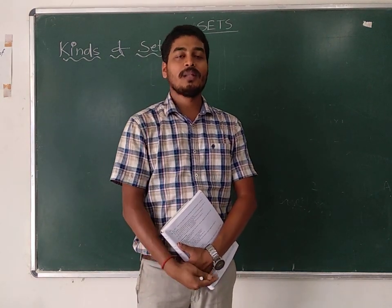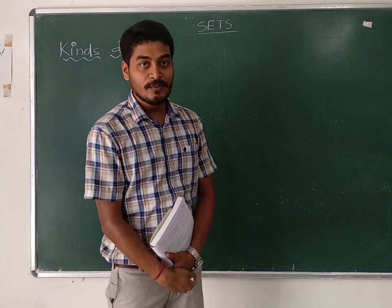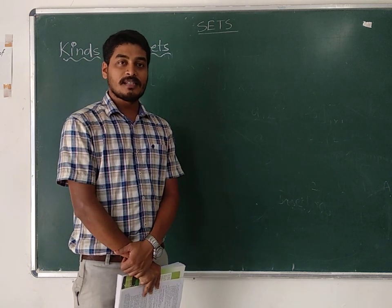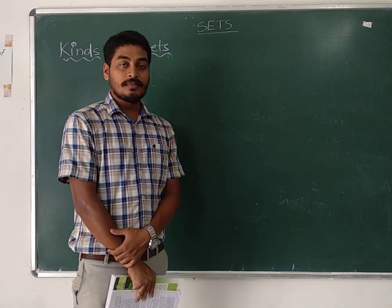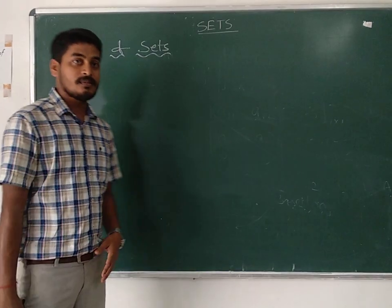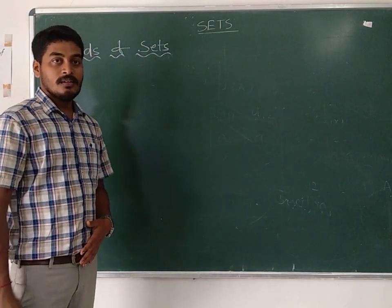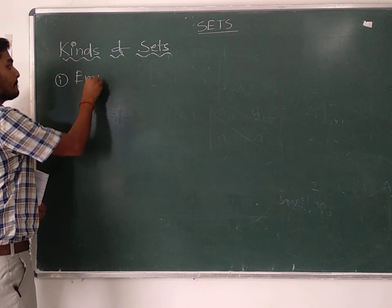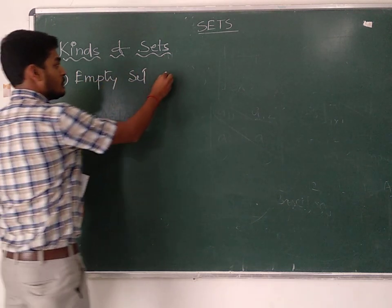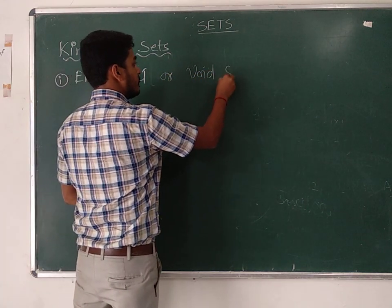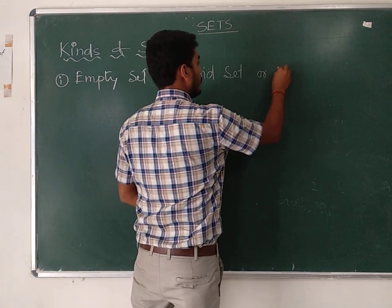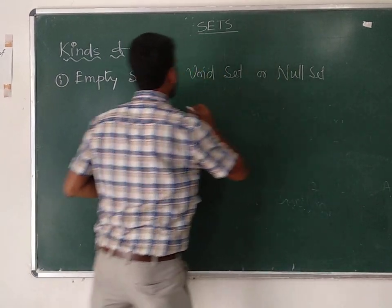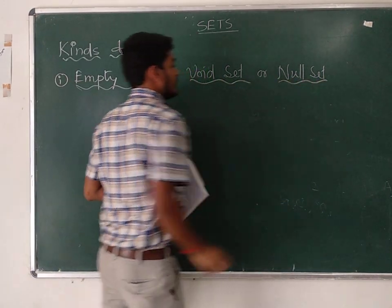Hello everyone, welcome to my lecture. In this video I will try to explain the different types of sets. There are many different types of sets in mathematics, and I am going to explain some of them. Let's start. The first one is empty set, which is also known as void set or null set.